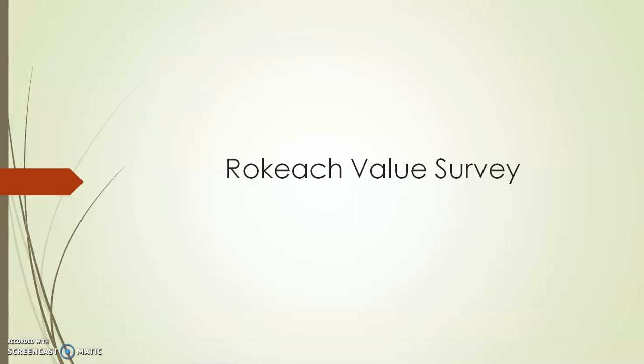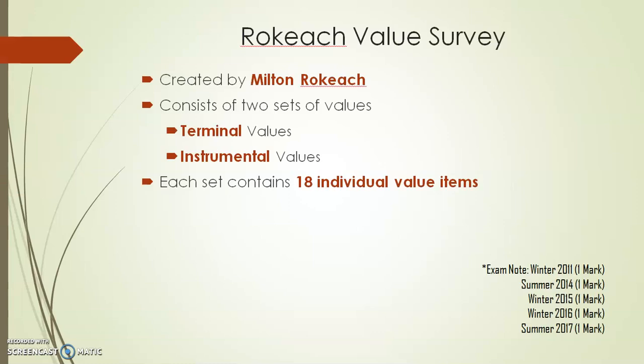The Rokeach Value Survey is a survey which was created by Milton Rokeach. Milton Rokeach is a behavioral scientist who conducted surveys and research. He interviewed and surveyed a lot of people, and arrived at two sets of values — he found that broadly, people have two types of values.